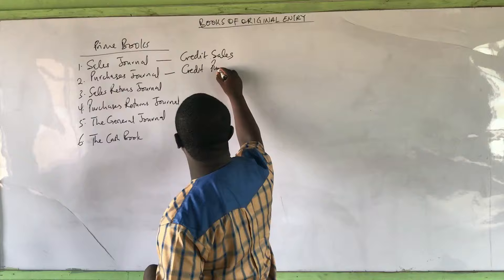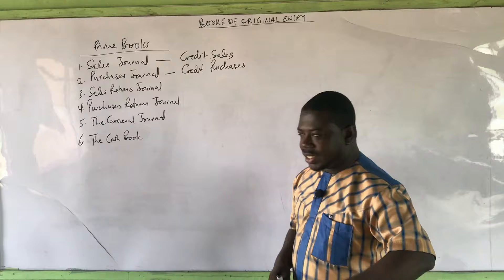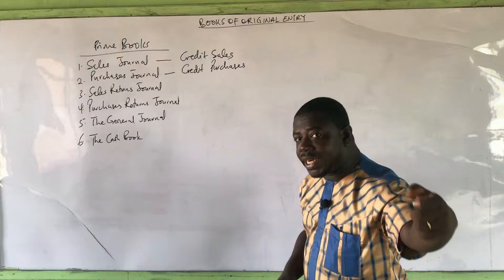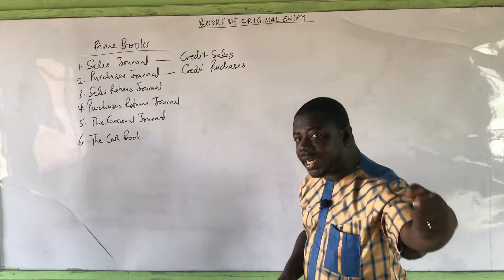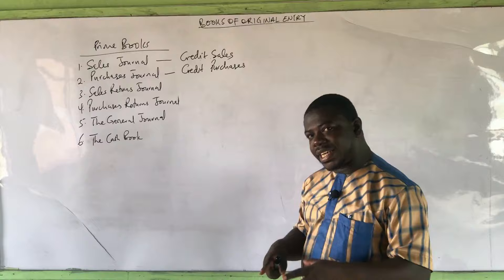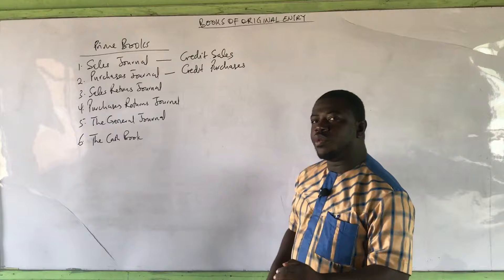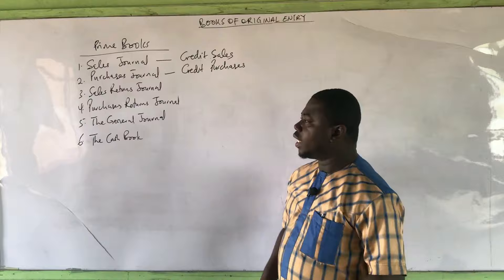The purchases journal is also there to cater for only credit purchases. Apart from credit purchases, we don't bring any other transaction into the purchases journal. When we say purchases in accounting, we are referring to goods or stock bought with the intention of reselling — our normal trading goods. When we buy or purchase a non-current asset, it is not purchases. There is a difference between 'purchase' as a verb and 'purchases' as a noun. Purchases refers to goods bought for resale, and that is the credit aspect. Cash purchases will not be in the purchases journal.